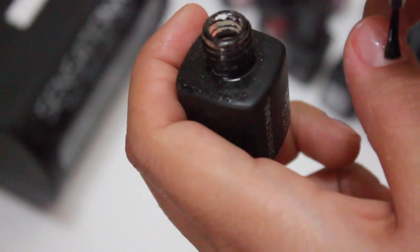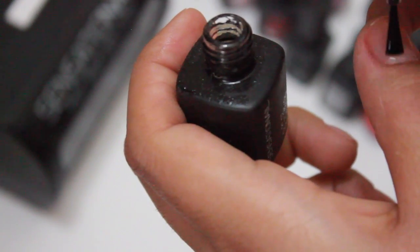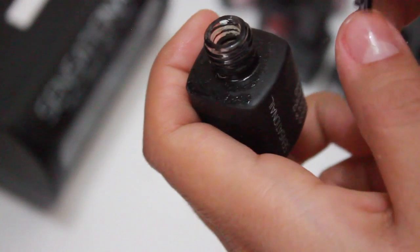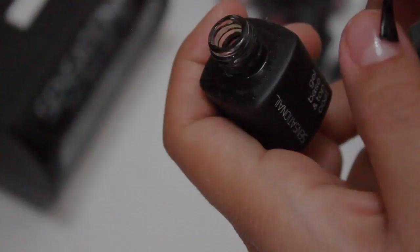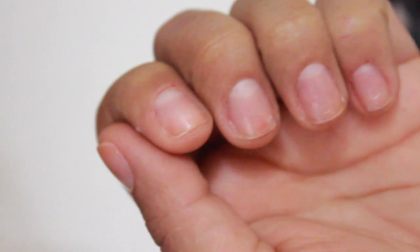So what I did is I applied the gel primer, I let that sit for a little bit, let it dry, I applied the clear base and top coat, then I cured it for a minute and then it should look like this.